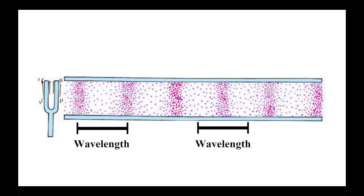The wavelength of a longitudinal wave can be measured by the distance from compression to compression or rarefaction to rarefaction. The amplitude of a longitudinal wave can be measured by how far particles in a medium are displaced as the wave moves past.